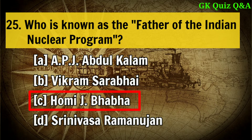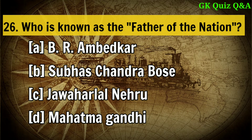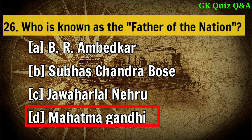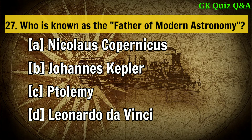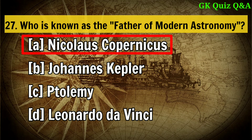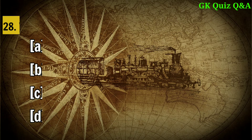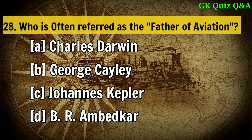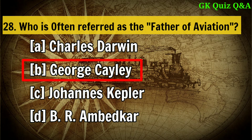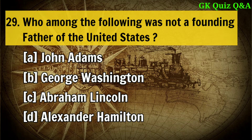Who is known as the father of the Indian nuclear program? Answer C: Homi J. Bhabha. Who is known as the father of the nation? Answer D: Mahatma Gandhi. Who is known as the father of modern astronomy? Answer A: Nicholas Copernicus. Who is known as the father of aviation? Answer B: George Cayley.